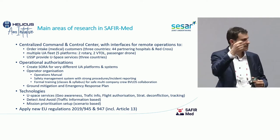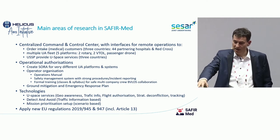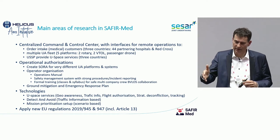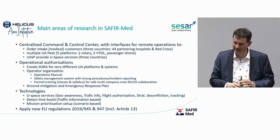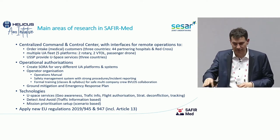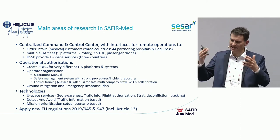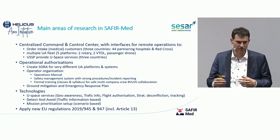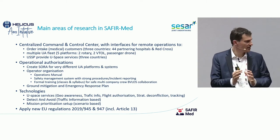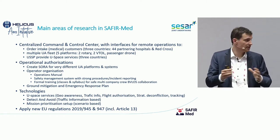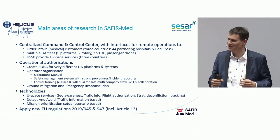On order intake, we have five platforms, a multi-type fleet. We have the USSP providing USpace services from three countries. Operational authorization is a very important topic — we spent about 80% of our time just on that to get ourselves into the air, creating SORA assessments for very different platforms. We have only one operator, who will use Article 13 to operate from Belgium to Germany and the Netherlands, simplifying the work for the full consortium. We have some challenges — we need an operations manual, safety management system, strong procedures, and incident reporting. We had an incident last week in tests, reported correctly, with a countermeasure physically created and in place for next week.